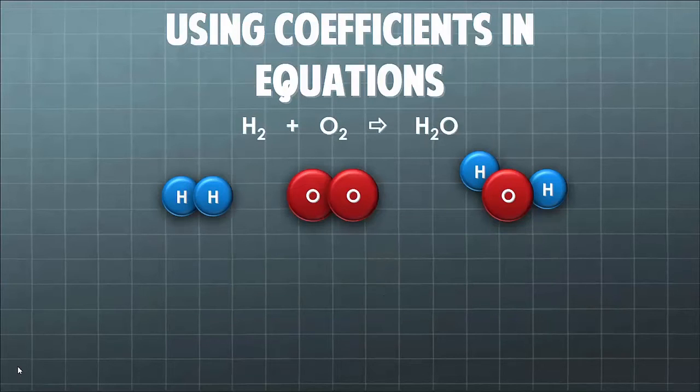First, a quick side note on using coefficients in chemical equations. Coefficients are those numbers in front of the chemicals in the equation. Even when there's no coefficient, it's implied that there is one there, the number 1.